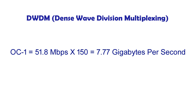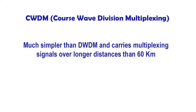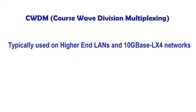The last technology to cover is CWDM, which stands for coarse wavelength division multiplexing. CWDM also uses multiple wavelengths of light to carry signals over longer distances faster, but CWDM is much simpler than DWDM or WDM, as DWDM and WDM only carry signals over approximately 60 kilometers. For the Network Plus exam, you just need to know that CWDM is typically used on higher end LANs and 10G base LX4 networks, because its lower cost provides a benefit compared to competitors.